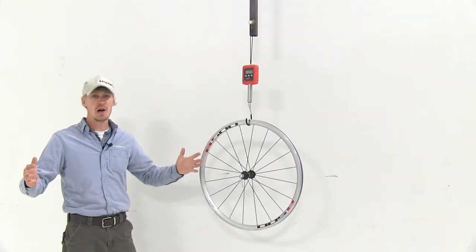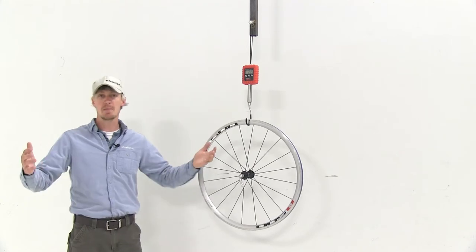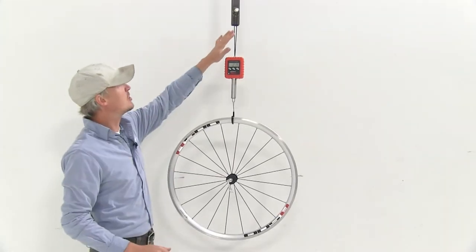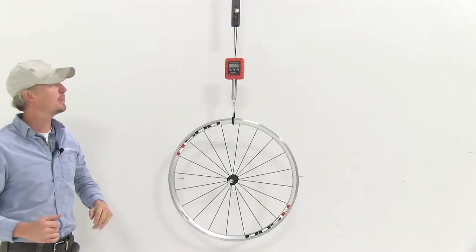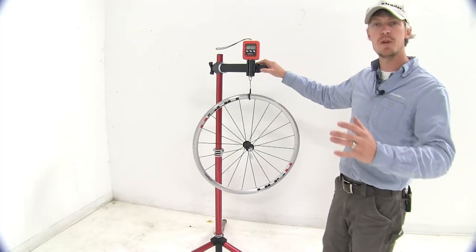This scale is specifically designed for weighing cycling products, backpacks, or any other sporting gear. The attached lanyard allows you to hang it anywhere. You can even secure it in your Feedback Sports workstand.